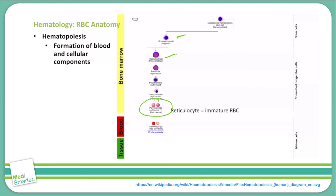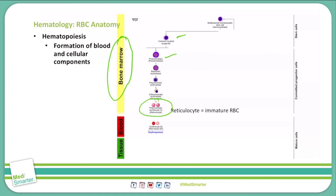Beyond that, it will turn into an erythrocyte, also known as a red blood cell. Of note, for the most part all of these progenitor cells are occurring in the bone marrow. You will however see some reticulocytes come out into the blood, and that will be a particular pathology that we will talk about later.